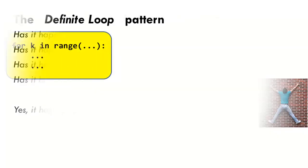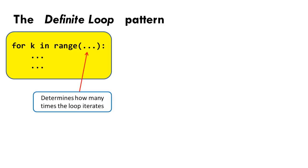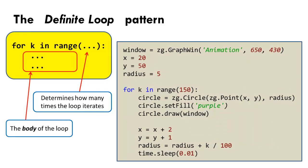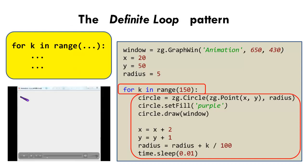Before investigating the details of the wait-until-event pattern, let's review the so-called definite loop pattern that we have already studied. In that pattern, a for loop goes for a certain number of iterations, repeatedly doing whatever is in the body of the for loop. After constructing a window and initializing some variables, the definite loop begins. It runs 150 times, each time constructing and drawing a purple circle, then moving and growing the circle for the next time through the loop.